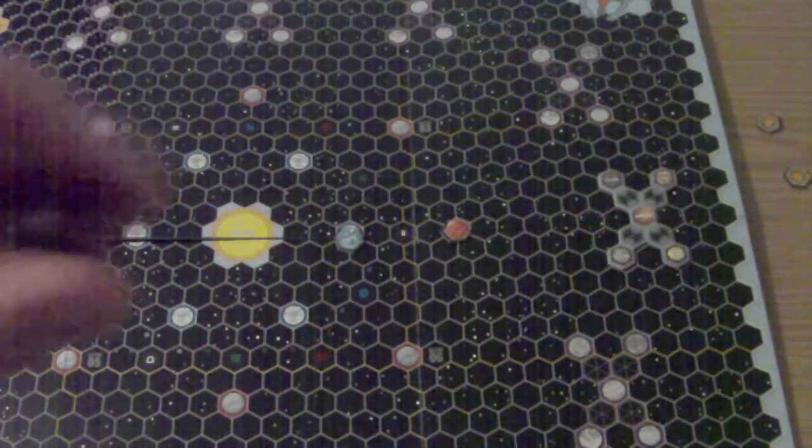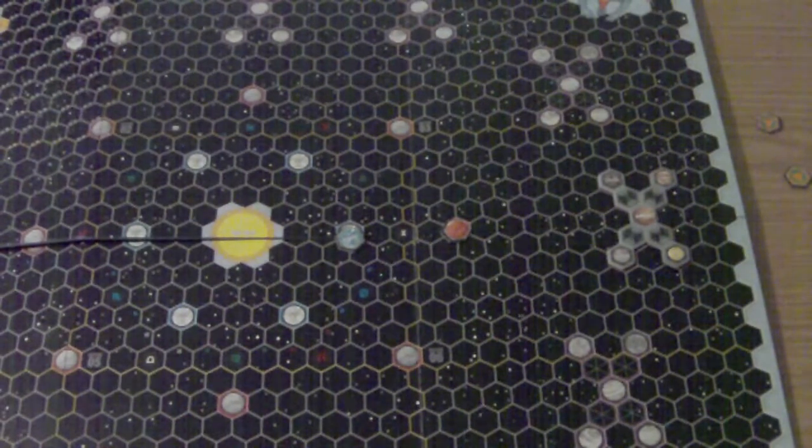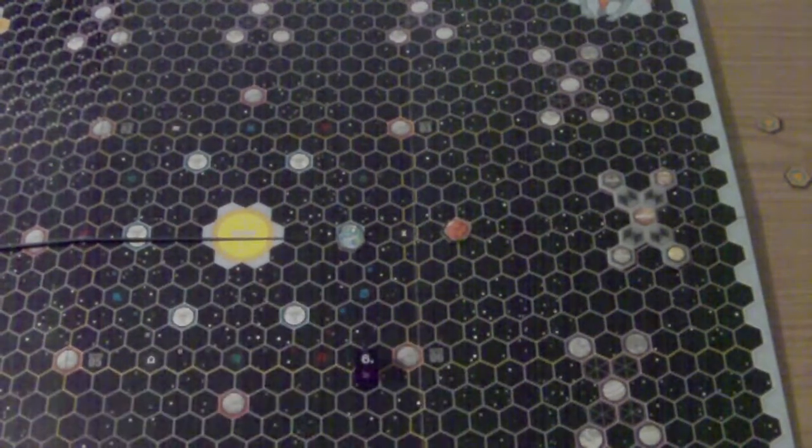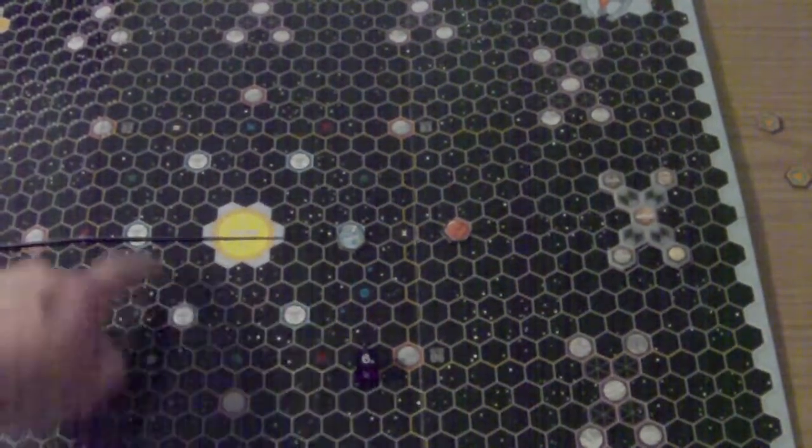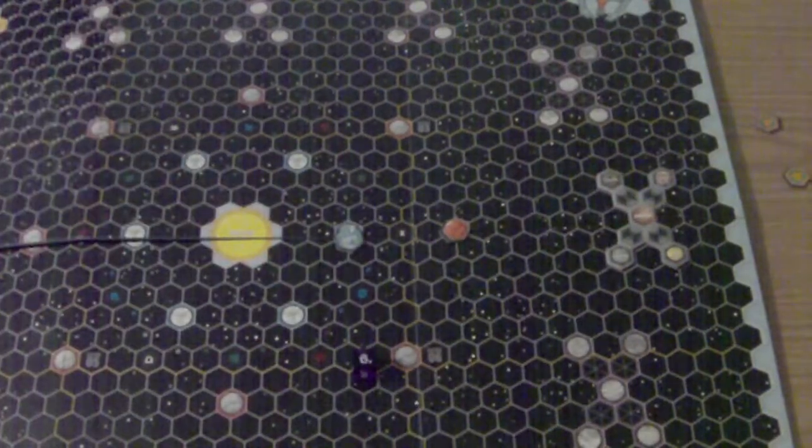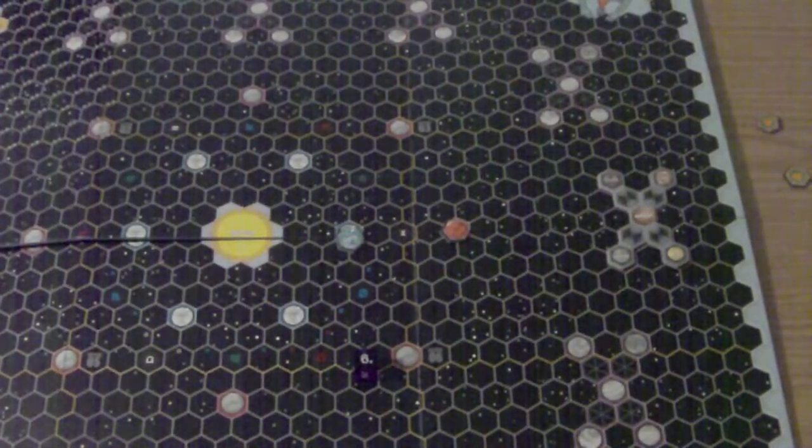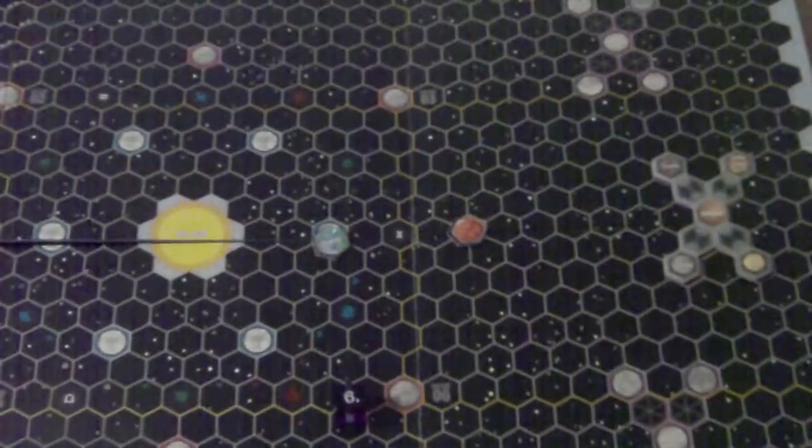You're then going to roll this violet die for Earth. Earth, I rolled 6, so it's going to go 1, 2, 3, 4, 5, 6 spaces. So it's going to land back at the original orbit for Earth.